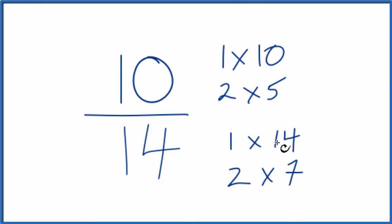So these are the factors for 10 and for 14. We're looking for the greatest common factor. That looks like 2 - that's the greatest common factor.